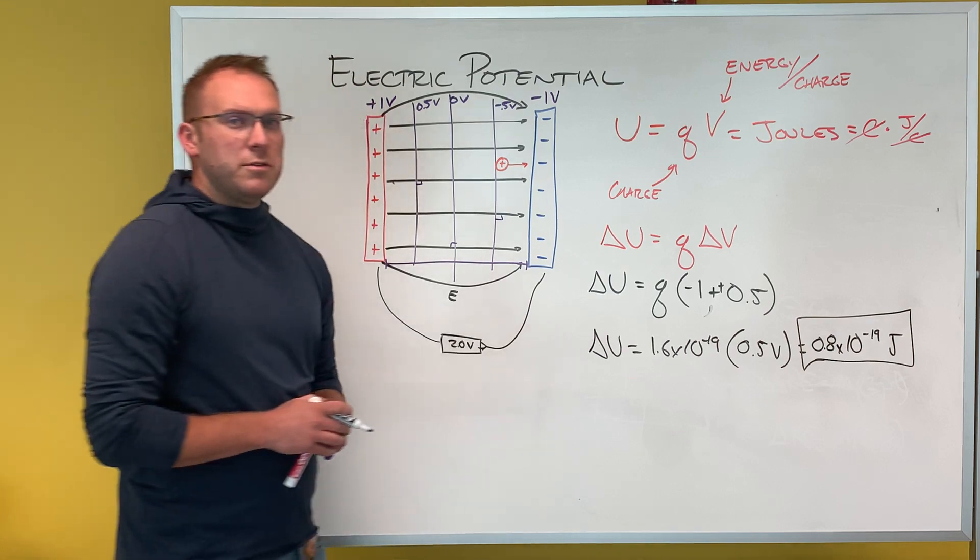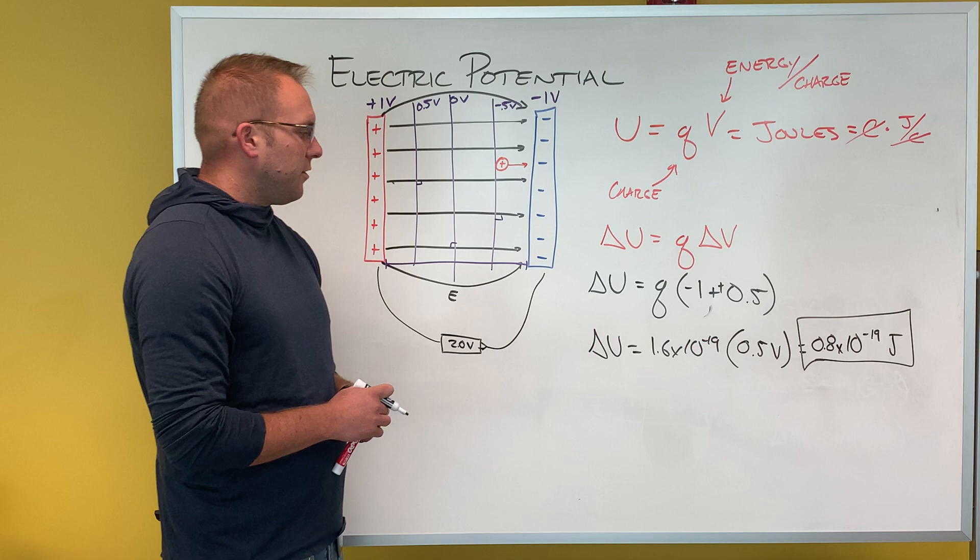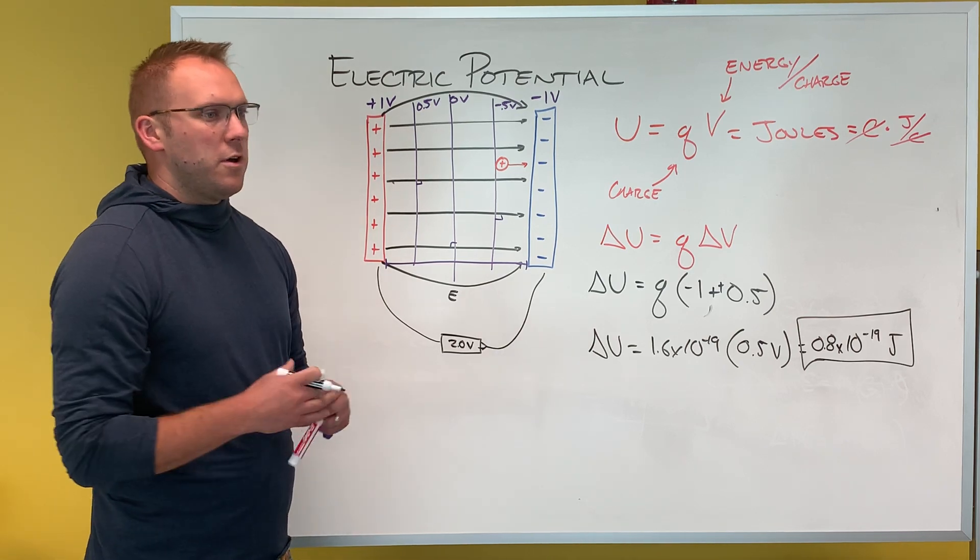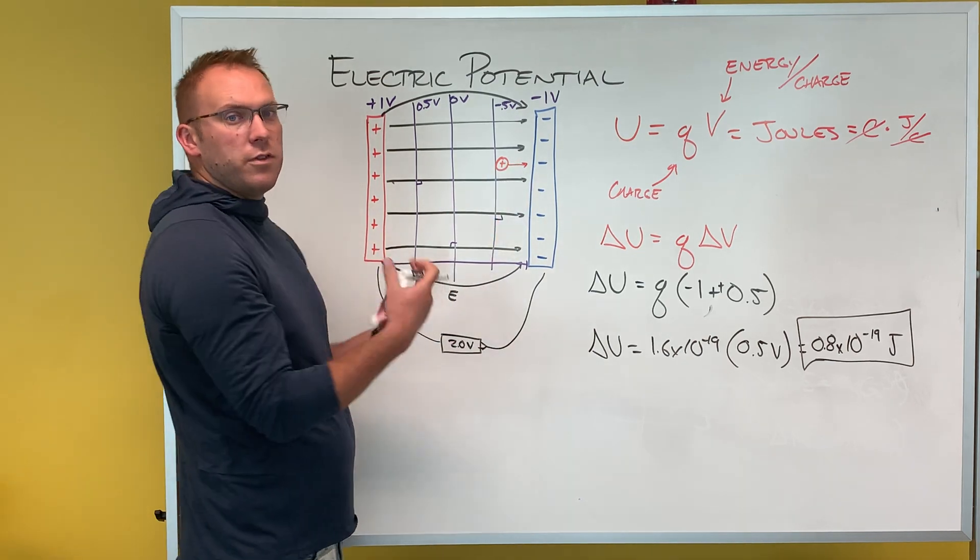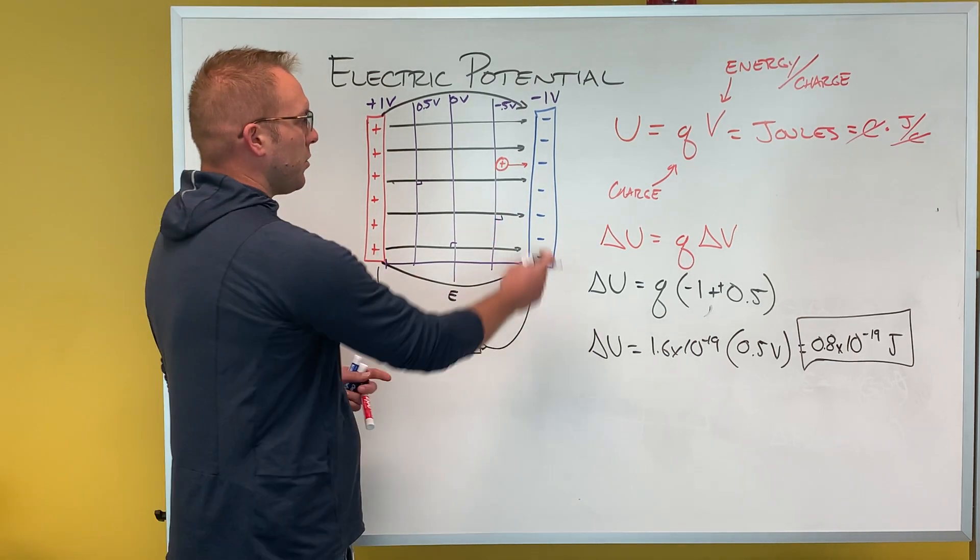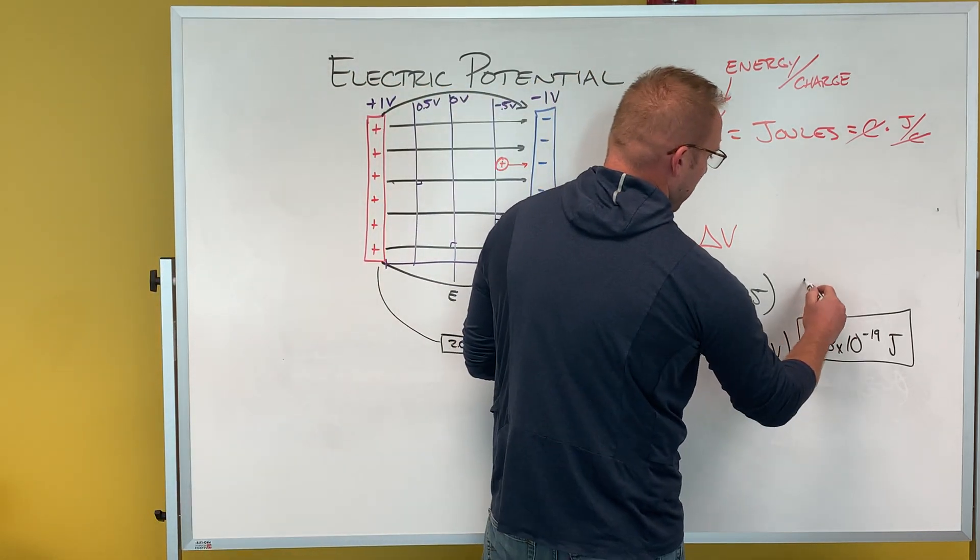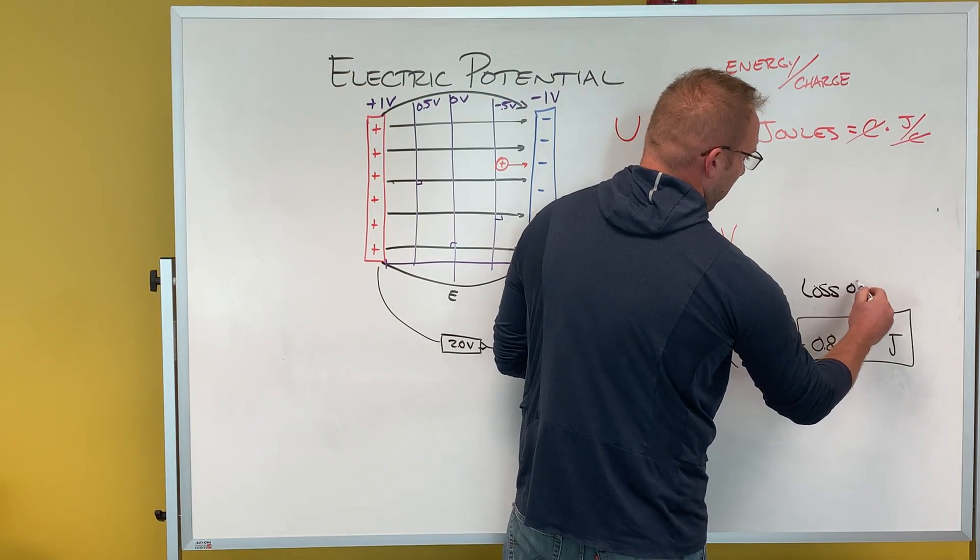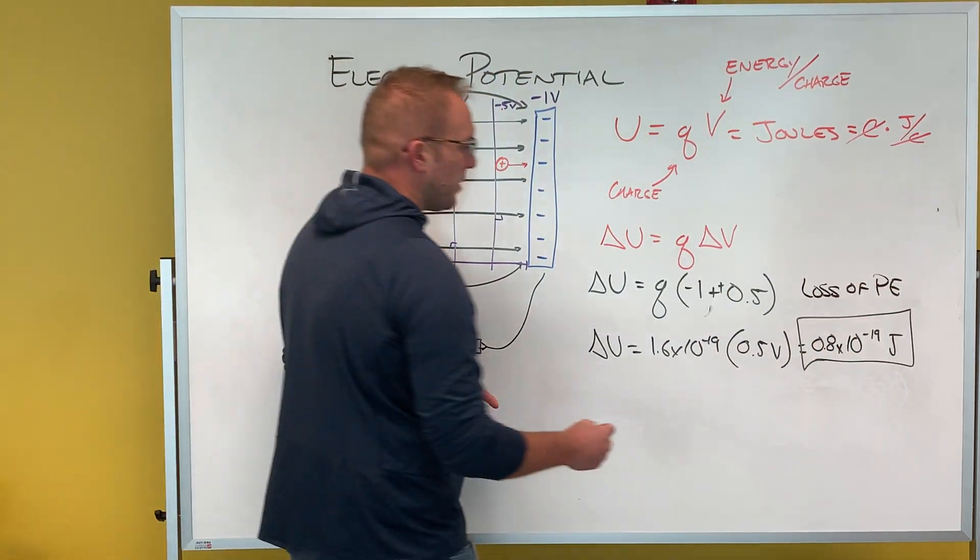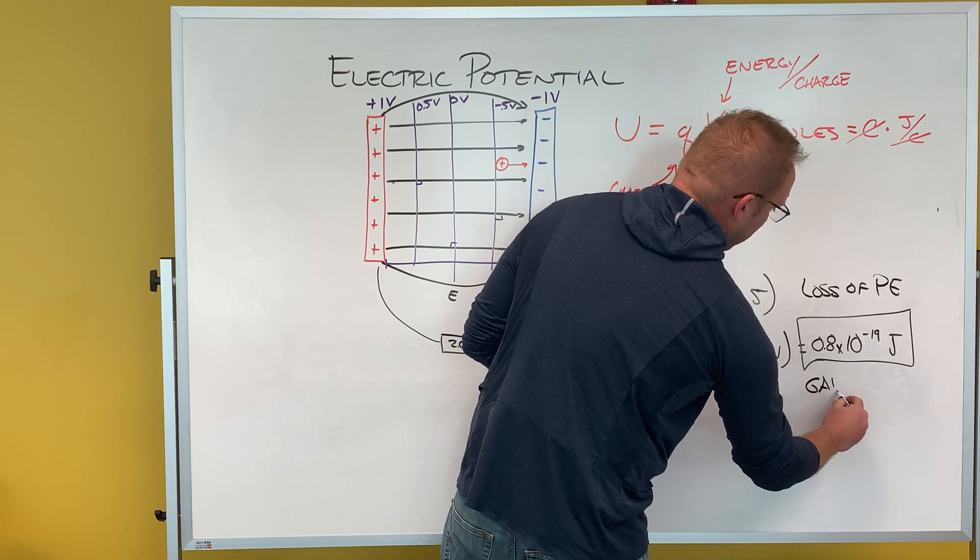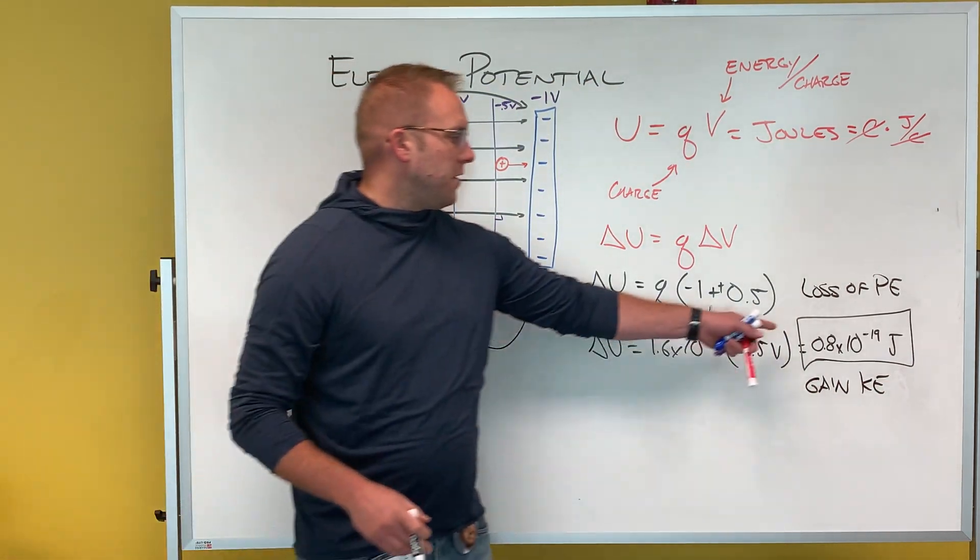That value would be 0.8 times 10 to the negative 19 joules. Not a lot of energy, but again, can help us with the understanding of now, if I wanted to know if we release this positive charge there, how fast is it going when it actually hits this negative plate? Because what this is, this is a loss of potential energy. And if we lose potential energy, we also gain kinetic energy because our energy is conserved. So both of these are this value.